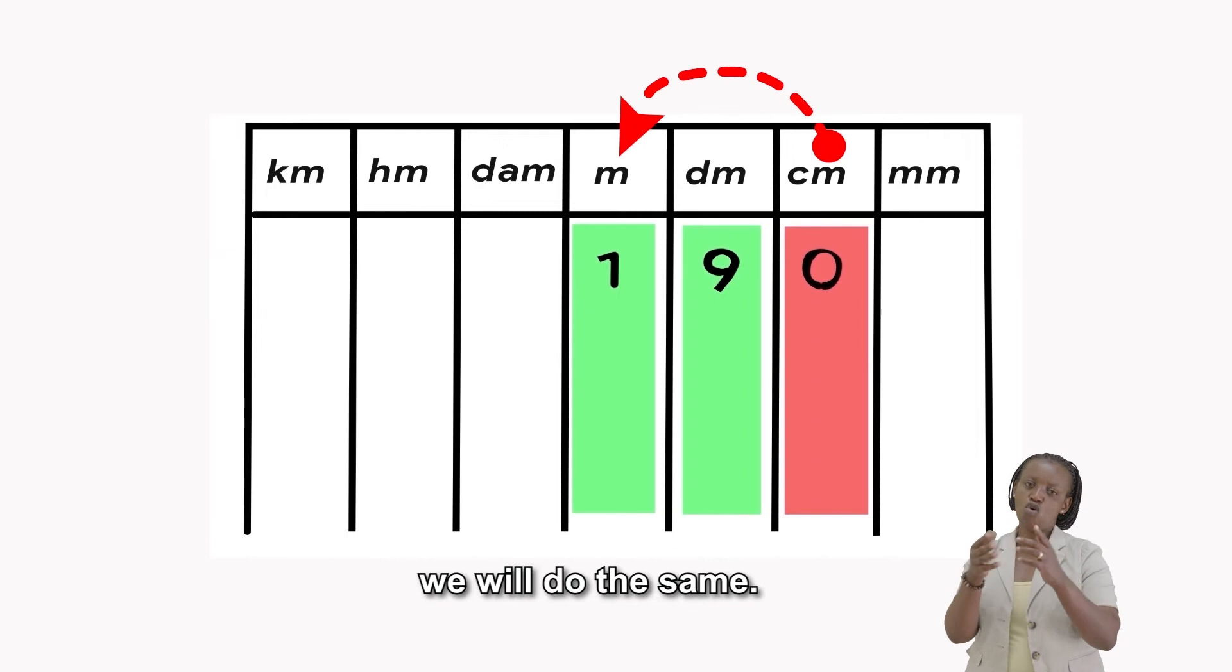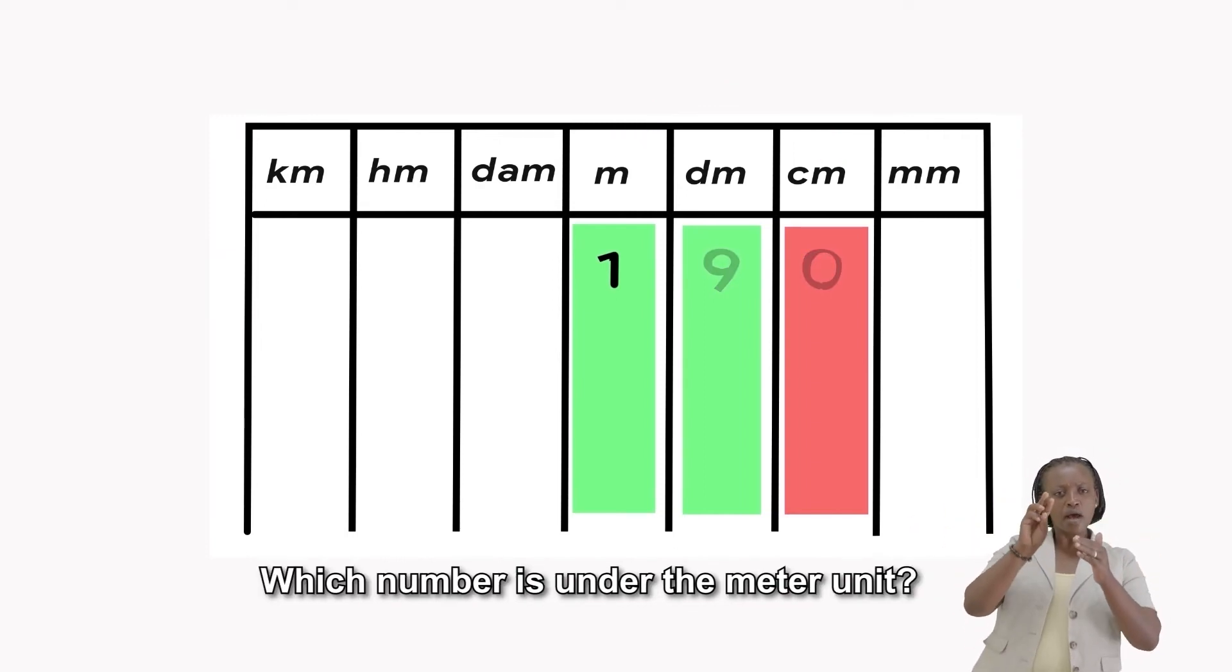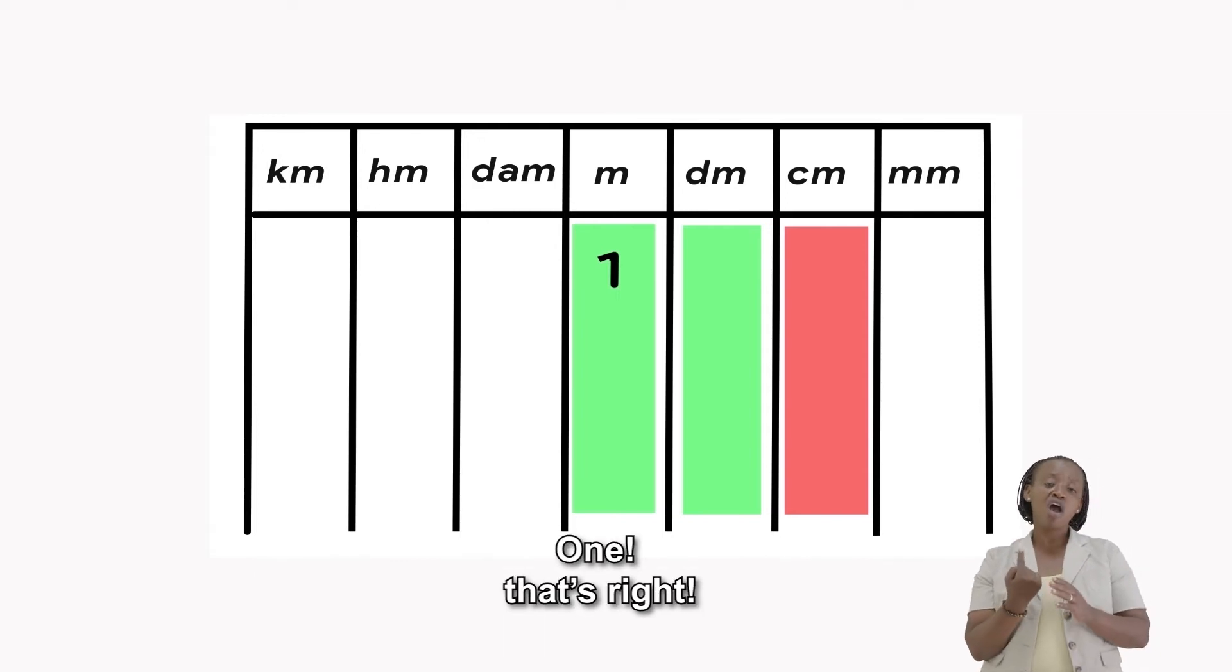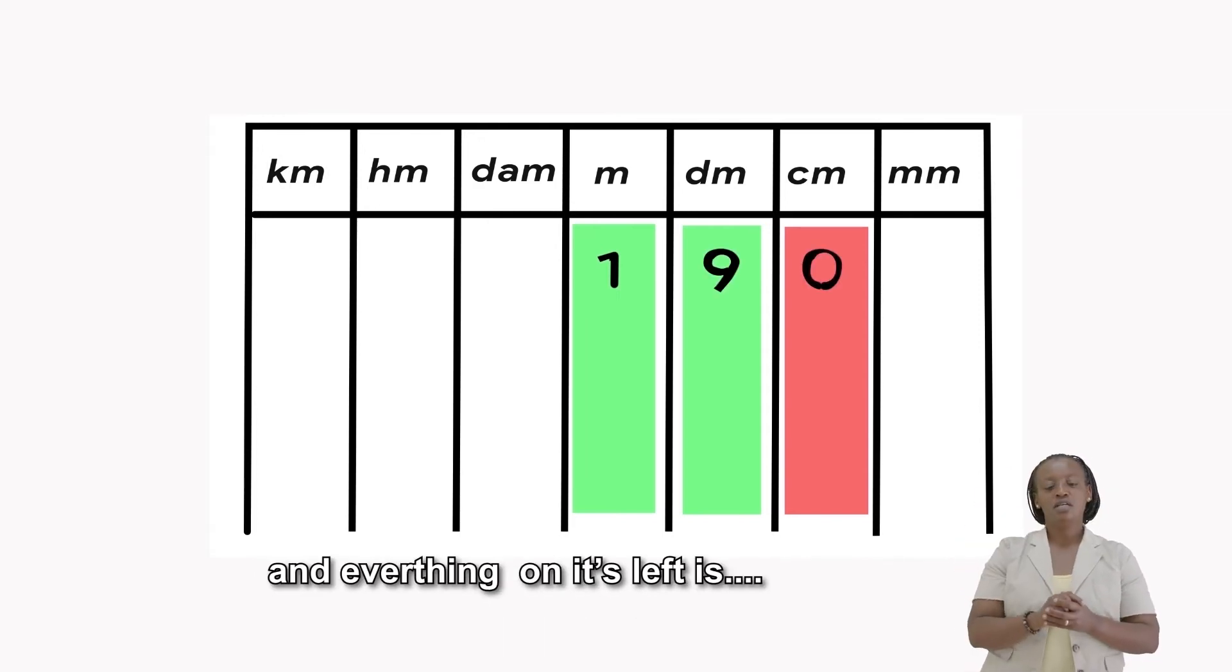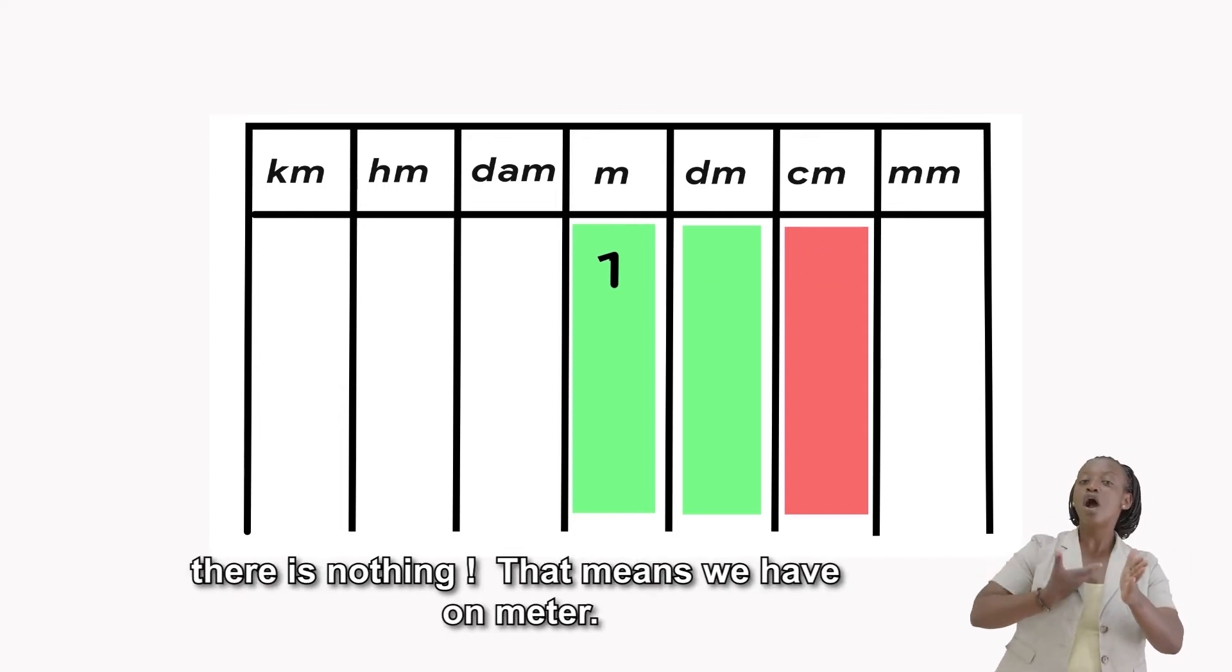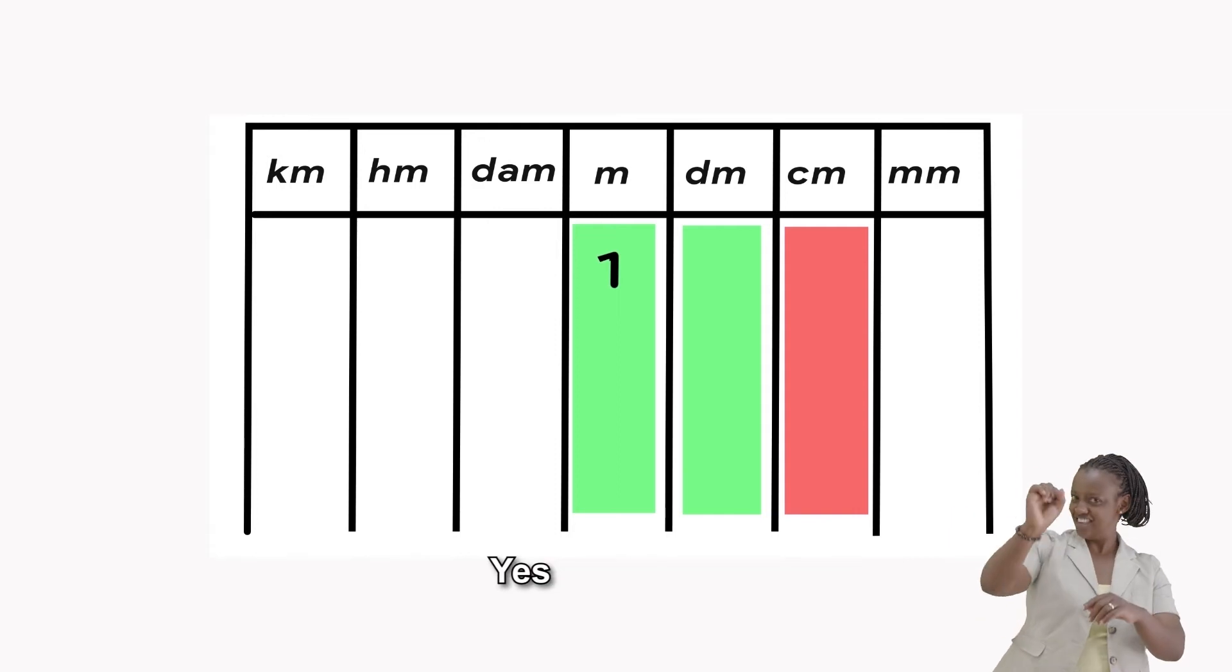To convert the centimeters to meters, we will do the same. Which number is under the meter unit? 1. That's right. And everything on its left is? There is nothing. That means we have 1 meter and 9 decimeters.